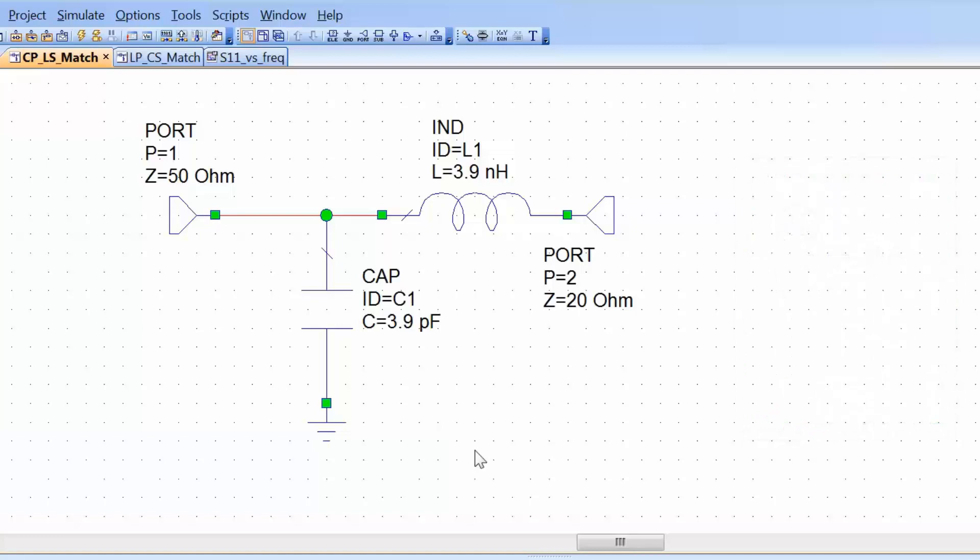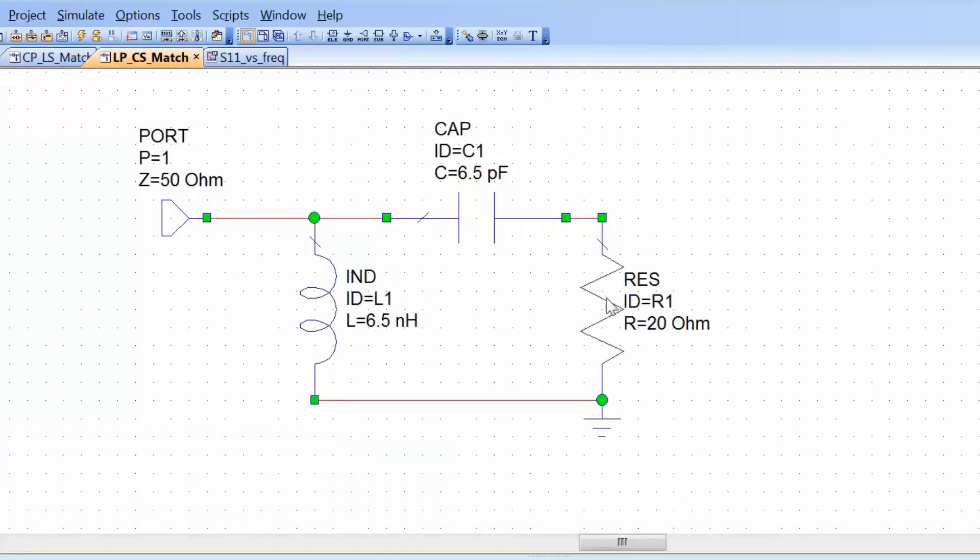We're all set to go now. What we can now do is actually measure the power that flows into port 2 from port 1 across frequency. We can do this by using the S parameter measurement which is called S21. S21 represents the power that gets from port 1 to port 2. So we'll do the same for our other matching network as well. We'll just replace this 20 ohm resistor with a 20 ohm port. This will enable us to carry out an S21 measurement as well, to see how much power gets to port 2 when the original input signal was coming from port 1.